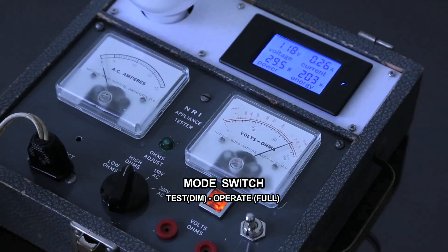There is a mode switch in this tester. When you test your equipment, this switch should be test position first, in other words, Dim Position.